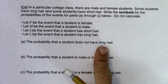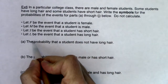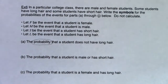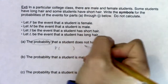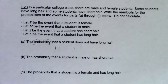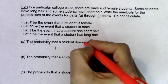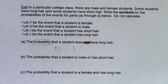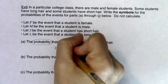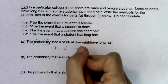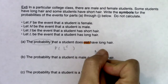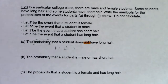The probability that a student does not have long hair. The first buzzword standing out is 'probability' — anytime you see the word probability, think P with some stuff in parentheses. The buzzword in this problem is the word 'not.' We have a symbol for not in stats: it's the complement. So when I say it does not have long hair, we would be thinking about long hair complement: P(L complement).